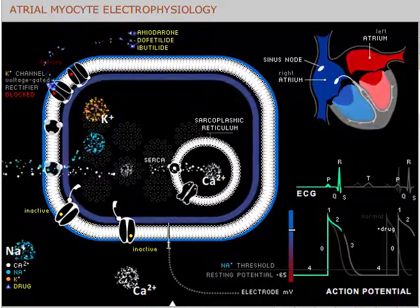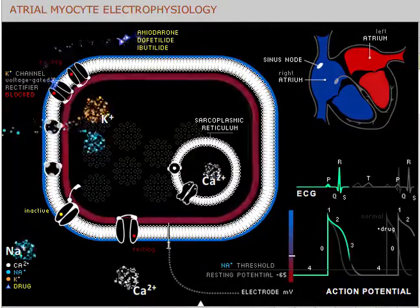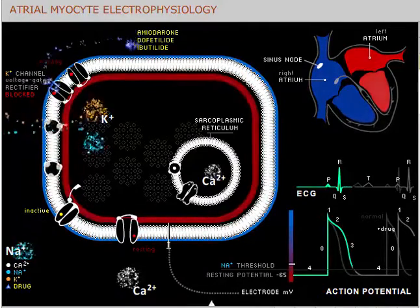Ibutilide is a pure potassium channel blocker, whereas amiodarone and ibutilide have additional pharmacological effects that contribute to their antiarrhythmic properties.